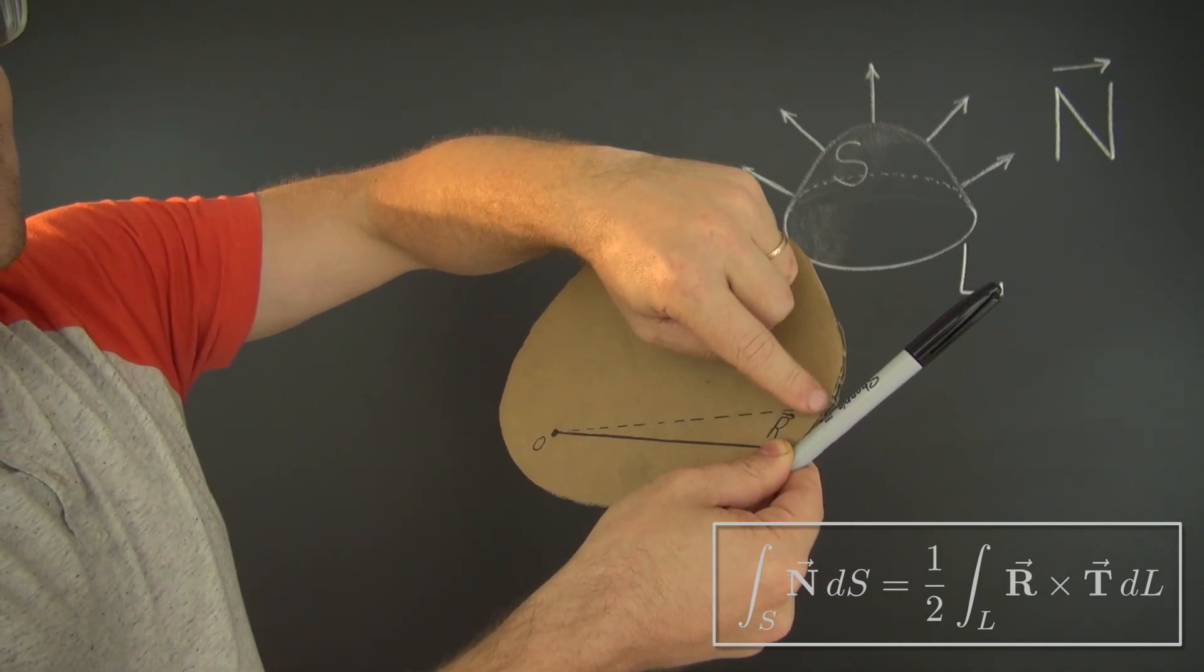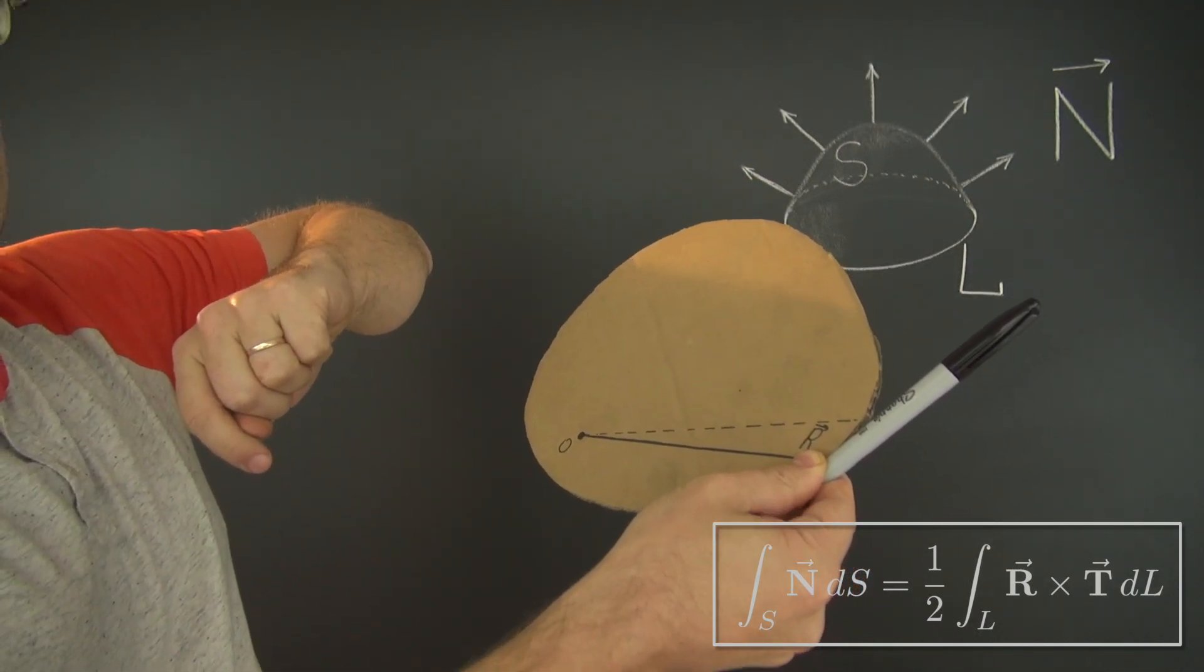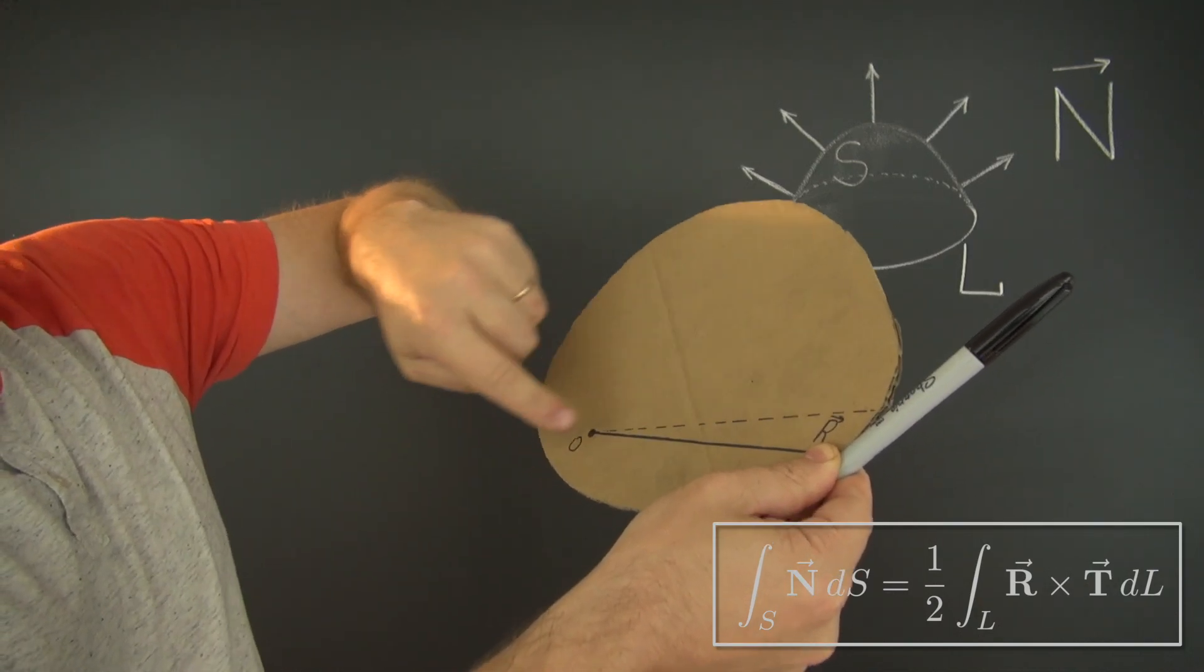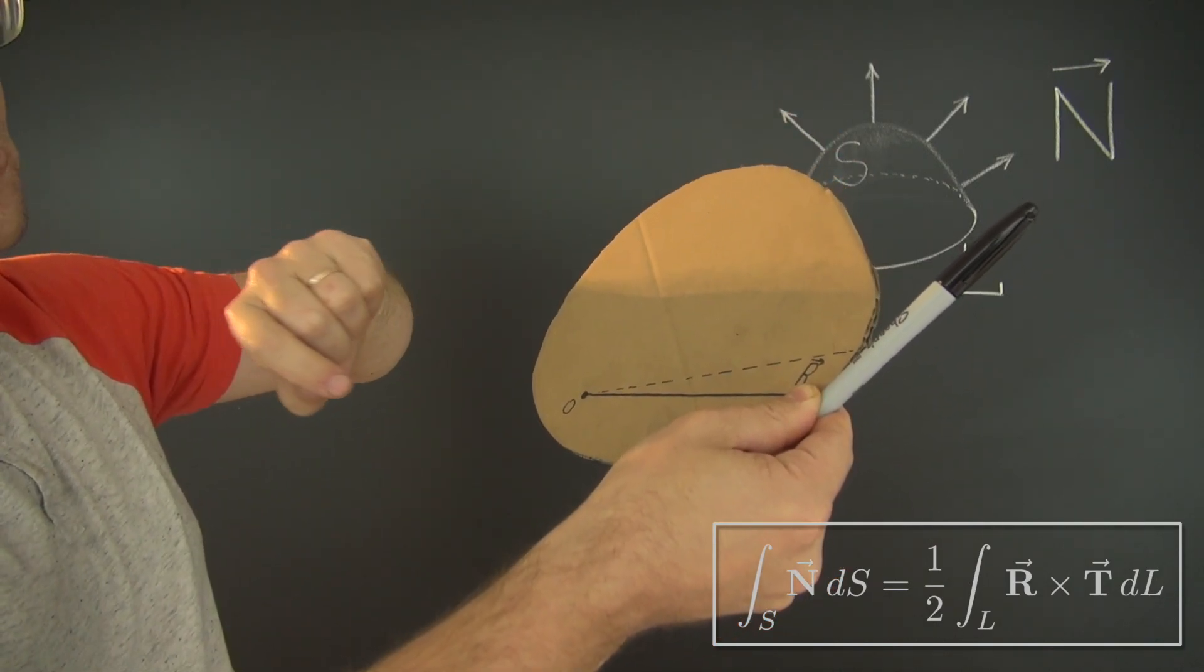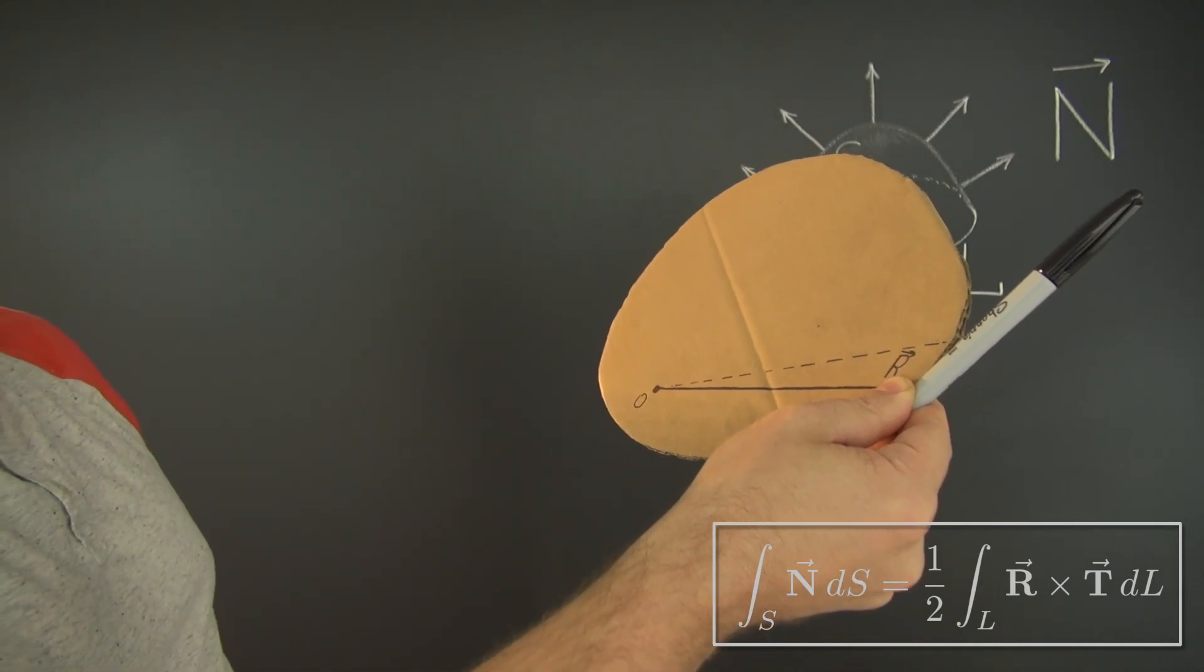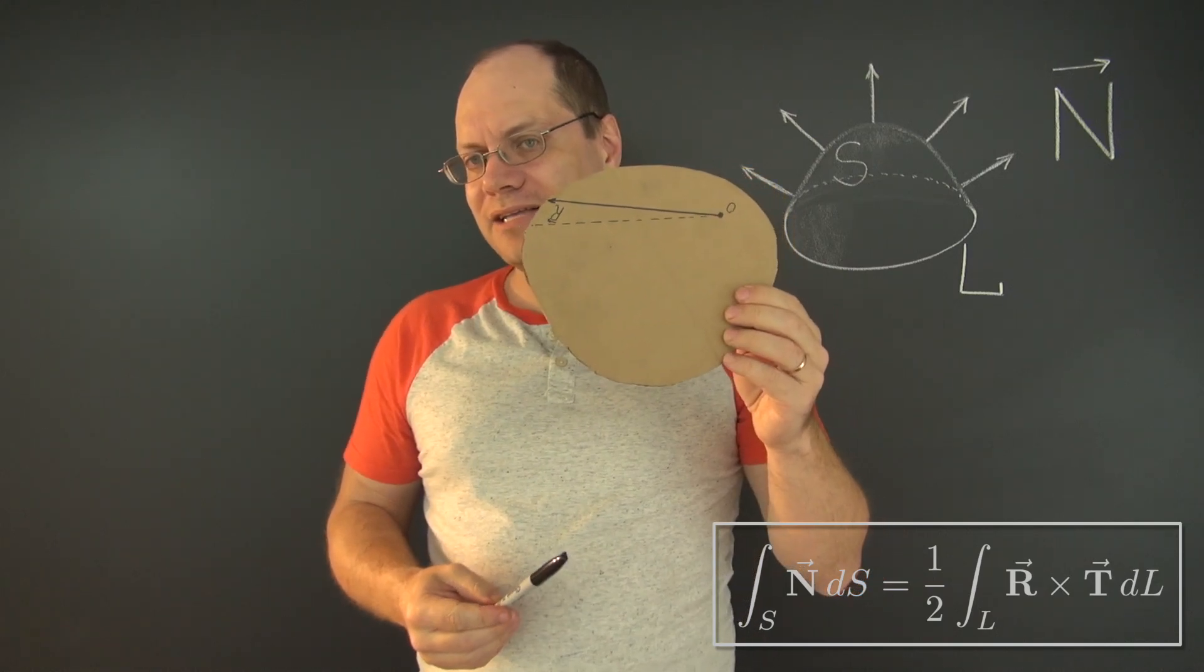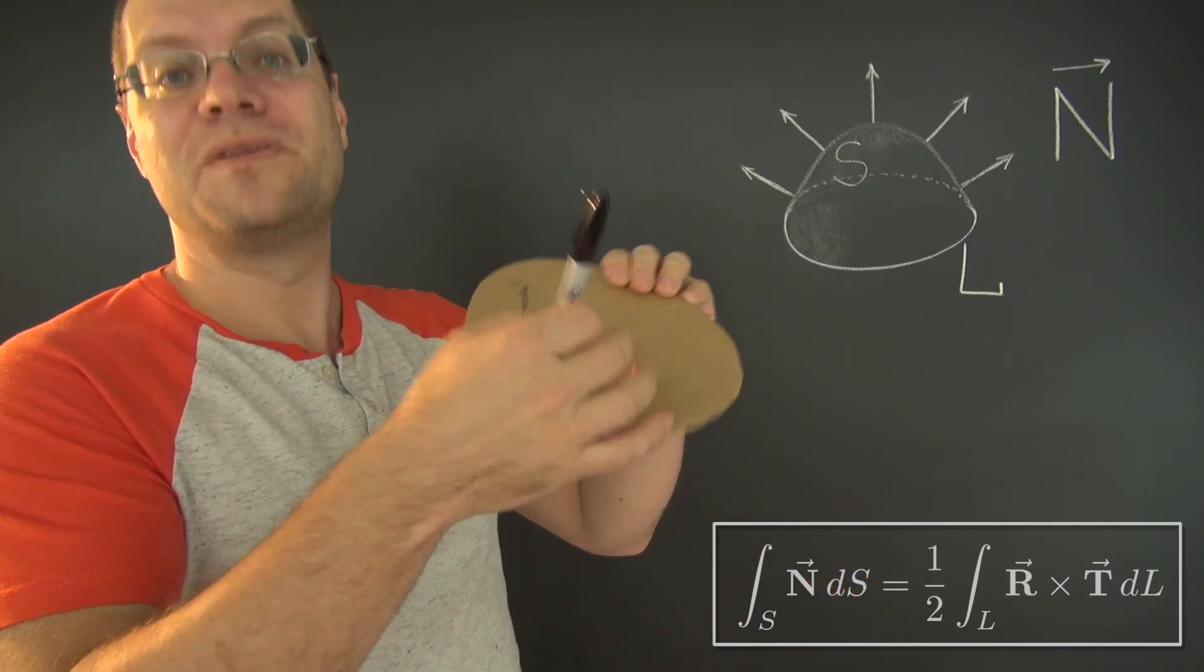When multiplied by dL, it becomes the area of this infinitesimal parallelogram. And with a factor of one-half, it becomes the area of this infinitesimal triangle. And when we integrate it over the contour, we're essentially adding up the areas of all of these infinitesimal triangles. So in the end, we once again get the total area of the patch multiplied by the unit vector in the orthogonal direction.